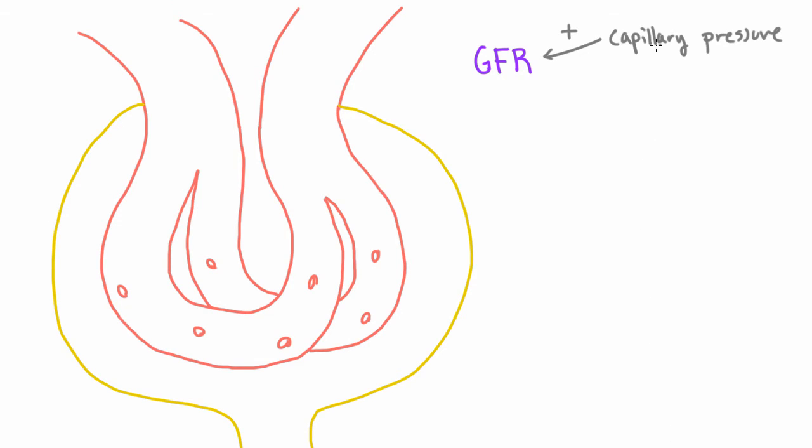And actually, this is one of the reasons why these glomerular capillaries have much higher pressure than other capillaries in the body. So their pressure is usually about maybe 60 millimeters of mercury, whereas other capillary beds have a pressure of 20 to 30.